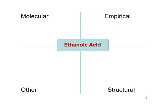Before we make a proper start, I'd like to refresh your memory about four possible types of formula. These are: molecular, empirical, structural, and another one which is a halfway house between molecular and structural. I'm going to use ethanoic acid to illustrate this. Ethanoic acid has a total of two carbons, four hydrogens, and two oxygens. This is its molecular formula.